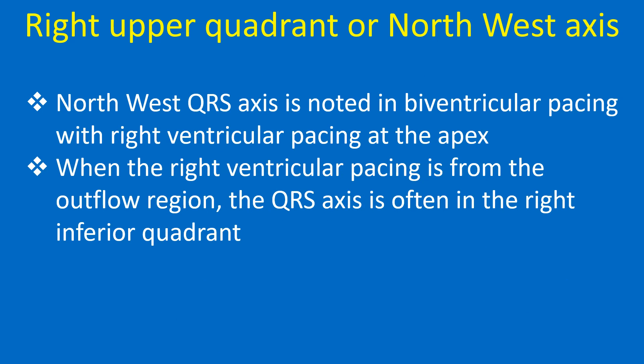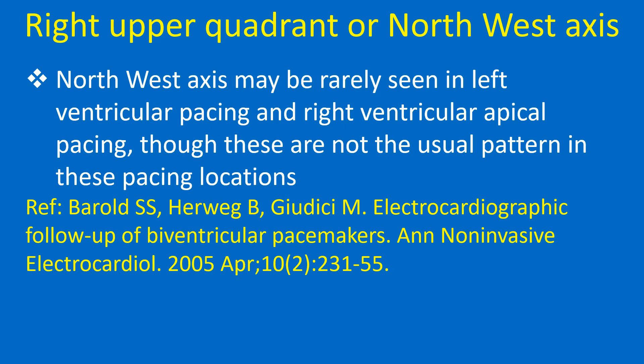North-west axis is noted in biventricular pacing with right ventricular pacing at the apex. When right ventricular pacing is from the outflow region, the QRS axis is often in the right inferior quadrant. North-west axis may be rarely seen in left ventricular pacing and right ventricular apical pacing, though these are not the usual patterns in these pacing locations.